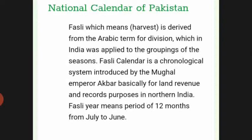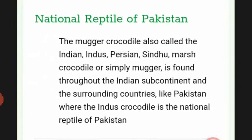The national calendar of Pakistan is the Fasli calendar. 'Fasli,' meaning harvest, is derived from the Arabic word for seasons, which in India was applied to groupings for the seasons. The Fasli calendar is a chronological system introduced by the Mughal Empire for land revenue and record purposes in northern India. The Fasli year means a period of 12 months from July to June.